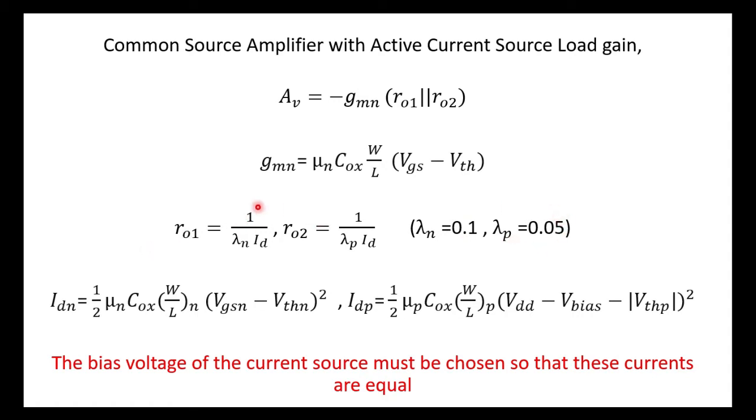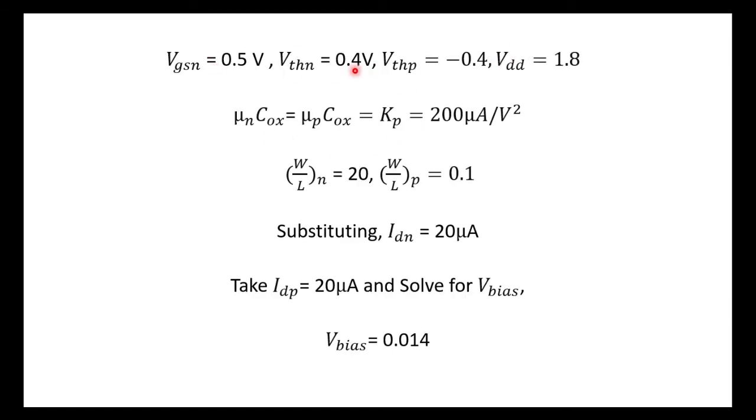And finally what we need to do is we need to calculate ro1 and ro2. For that we need this current Id, and this Id has to be same throughout the circuit. To do so, I have to first calculate the Idn current through the NMOS. I know μn Cox, I know W/L of N, I know Vgsn minus Vthn whole square. I can calculate Idn, and later once I have all these values, I substitute all these values and I calculate Idn as 20 microamperes.